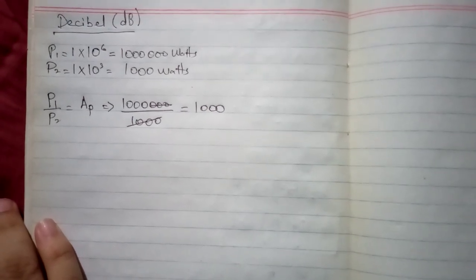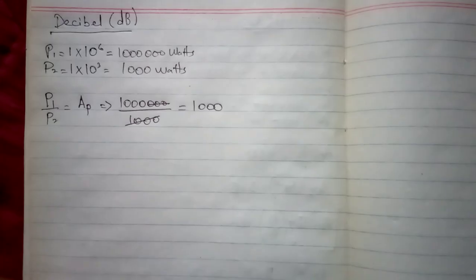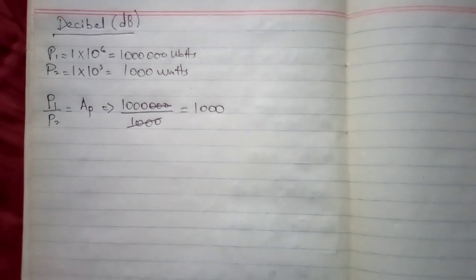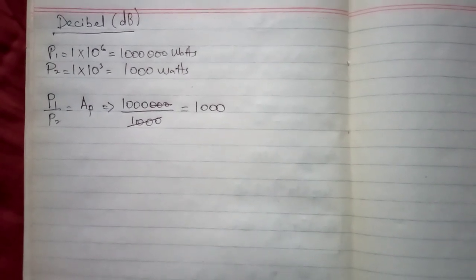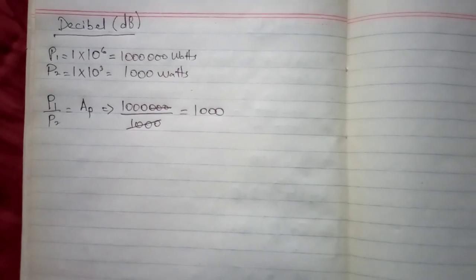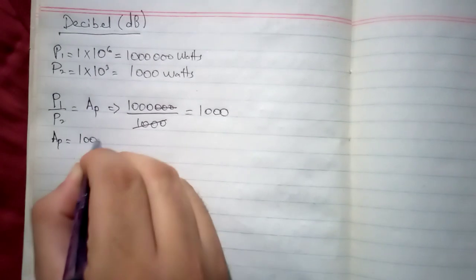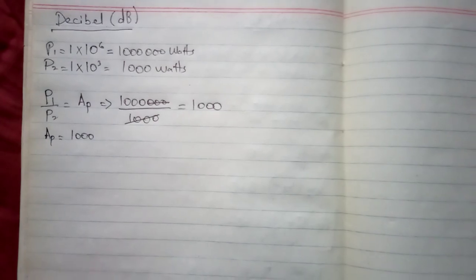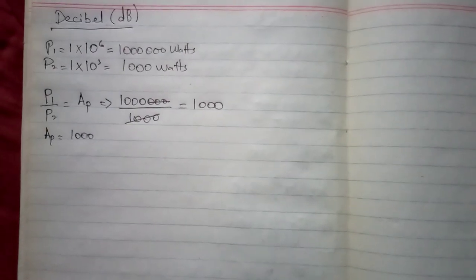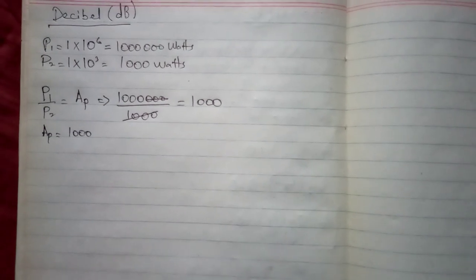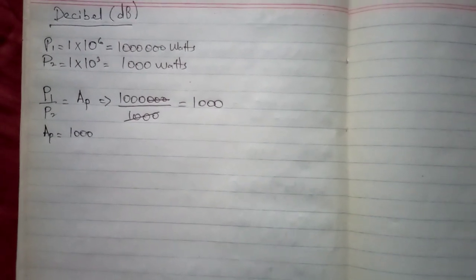P1 divided by P2 is equal to 1000, this 1000 is unitless. Why? Because it is a ratio between two similar quantities and you know whenever we take the ratio between two similar quantities it is unitless. So the power gain has a value 1000, which is unitless. Now look, this value 1000 is much bigger and it will be difficult for me to handle it, to write it, to use it in calculations, in measurements, and in numericals, so I want it to be represented by a small value.